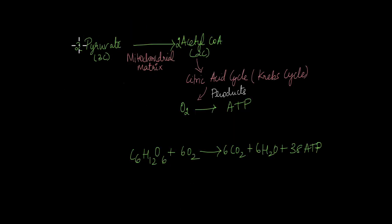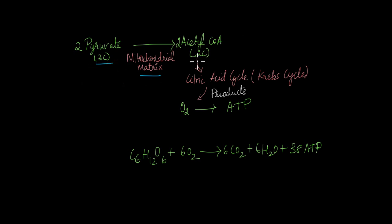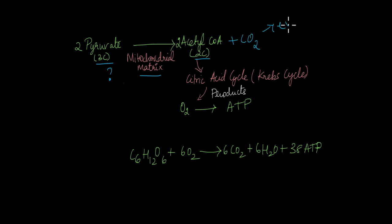Within the mitochondrial matrix, pyruvate is converted to acetyl-CoA. Pyruvate is a three-carbon molecule and acetyl-CoA is a two-carbon molecule — the missing carbon is released as carbon dioxide, which is what we exhale out.